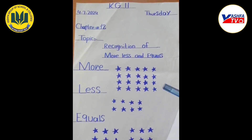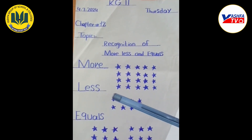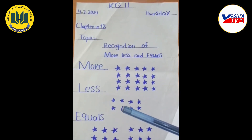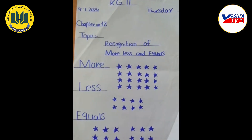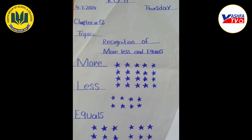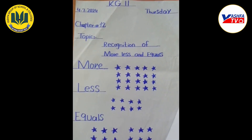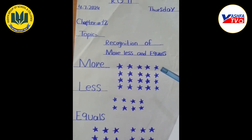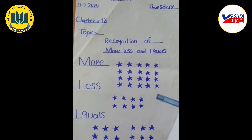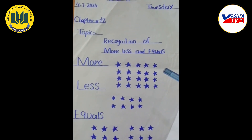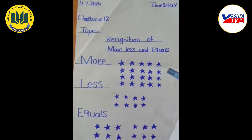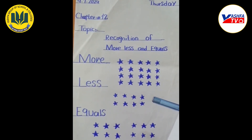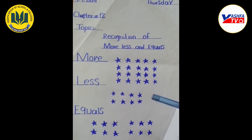کتنے stars ہوئے؟ 20۔ اب next stars count کرتے ہیں: 1, 2, 3, 4, 5, 6, 7, 8۔ کتنے stars ہوئے؟ 8۔ اب آپ مجھے بتائیں کہ more کون سے stars ہیں اور less کون سے؟ پہلے والے stars more ہوئے اور دوسرے والے less۔ پہلے والے stars تعداد میں زیادہ ہیں تو یہ more ہوئے، اور دوسرے والے تعداد میں کم ہیں تو انہیں less بولیں گے۔